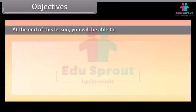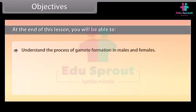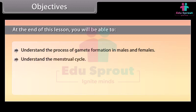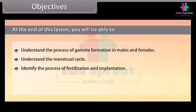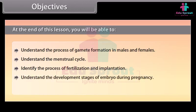At the end of this lesson, you will be able to: understand the process of gamete formation in males and females, understand the menstrual cycle, identify the process of fertilization and implantation, understand the development stages of embryo during pregnancy, and understand parturition and lactation.